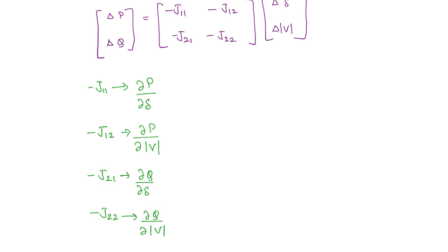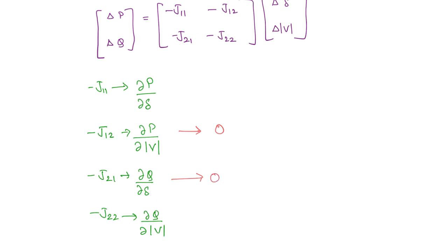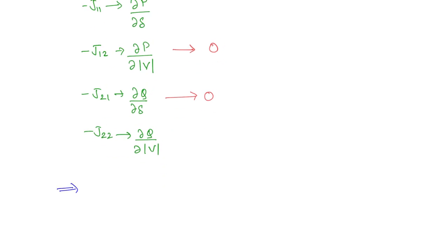So this you are taking to be 0. Similarly, the reactive power, the partial differentiation of reactive power with respect to the voltage angle that is going to be 0. So that is what you are going to substitute here. So what will you get? The final expression delta P delta Q this will be equal to minus J11, 0 here, 0 minus J22. Here you have delta delta and delta V.